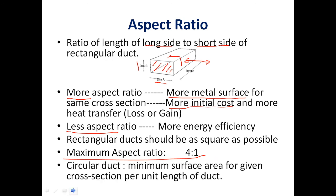The most ideal shape for a duct is circular, because it provides the minimum surface area for a given cross-sectional area per unit length. However, circular ducts are difficult to fabricate and install, so they are not commonly preferred. In practice, we use rectangular ducts with the minimum possible aspect ratio.